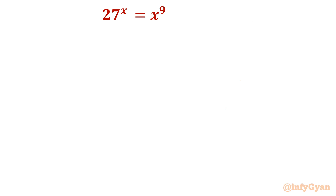Hello everyone, welcome to Infigyan. In this very exciting video on exponential equations, we are going to solve one unique exponential equation, which is 27 power x equal to x power 9. Why unique? Because on the right hand side, we have an odd function. I am going to solve this question by three methods and then conclude using graphs.